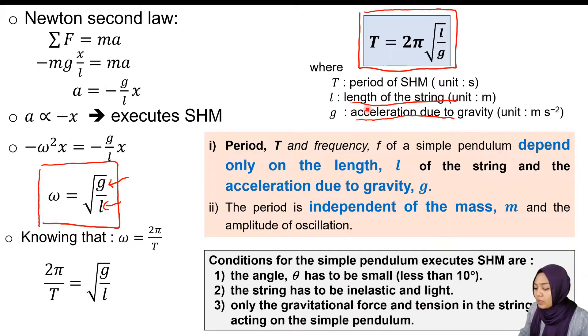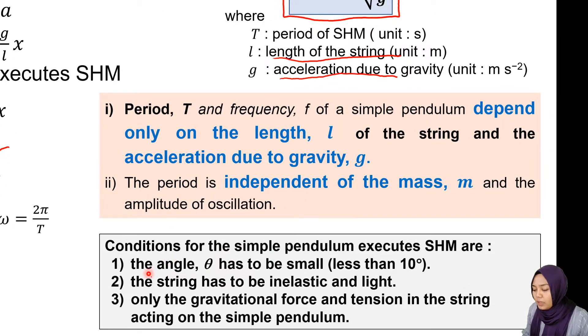The conditions we have to meet are: the angle must be small (less than 10 degrees); the string has to be inelastic, meaning it cannot bounce back like a spring; and only the gravitational force and tension in the string act on the simple pendulum. When you release it, make sure you release it properly, not push the pendulum so it has external force to the system. That's all for this chapter, thank you.